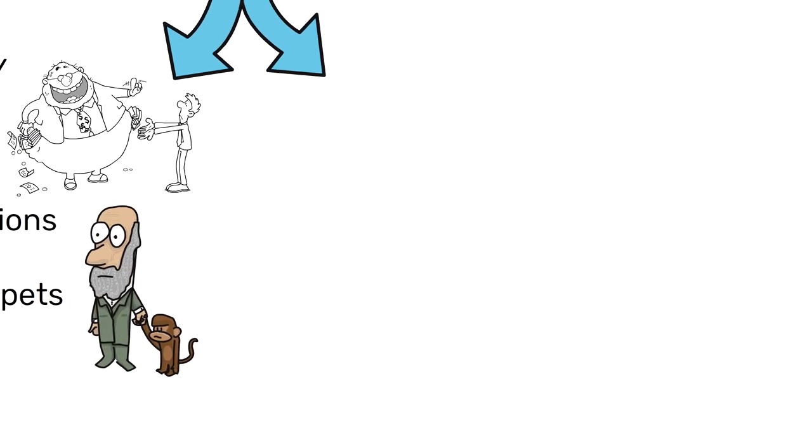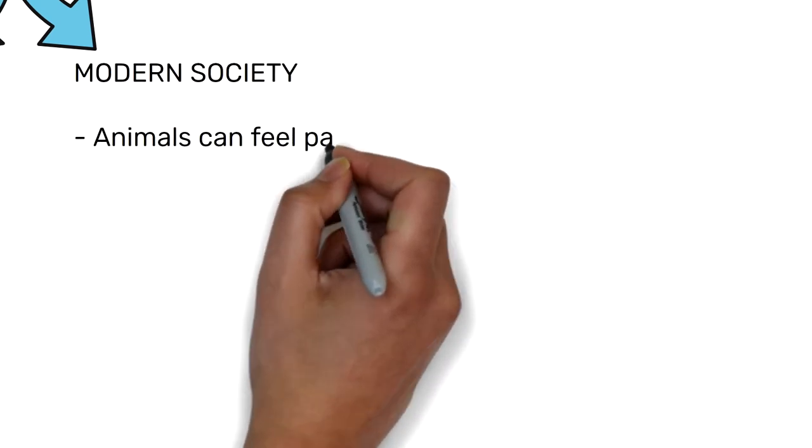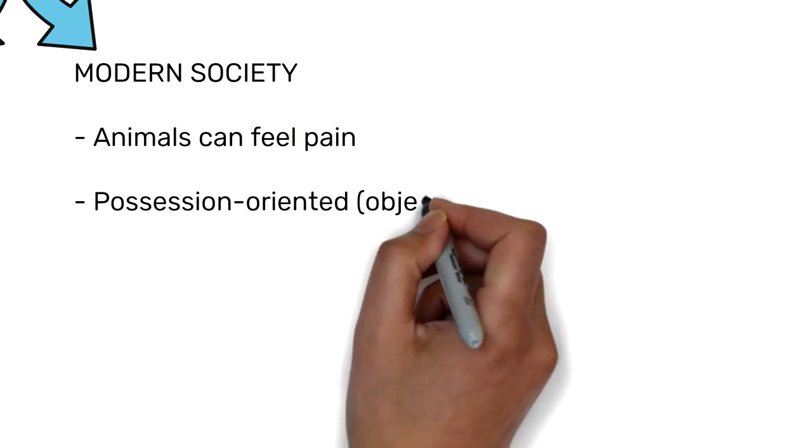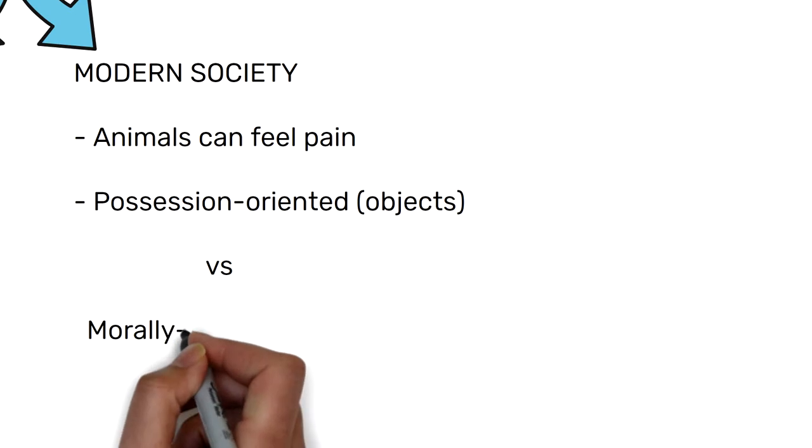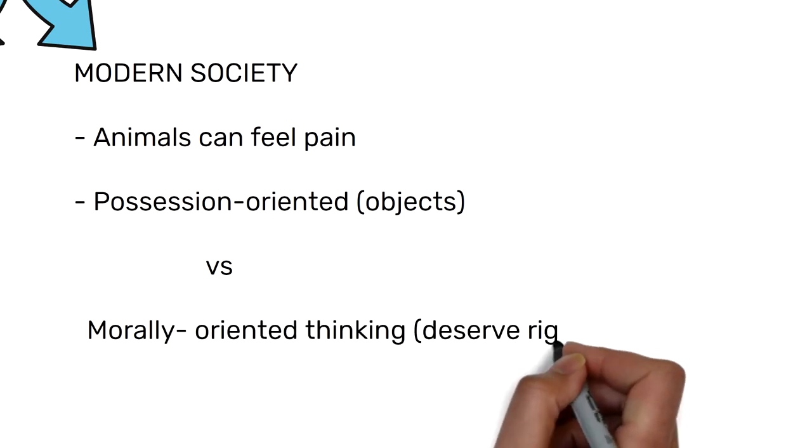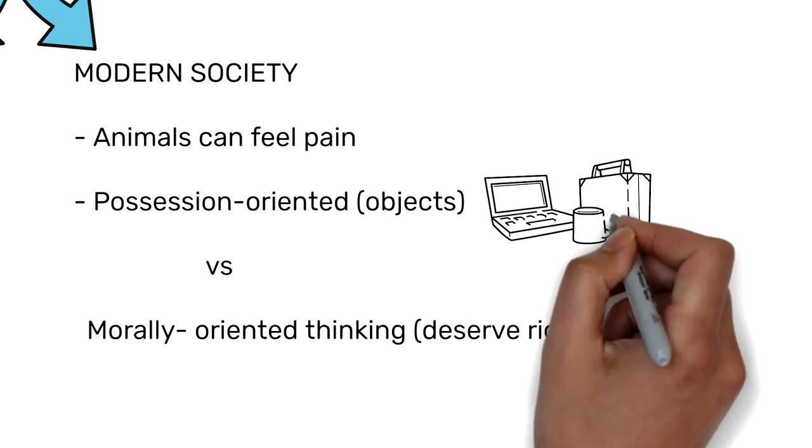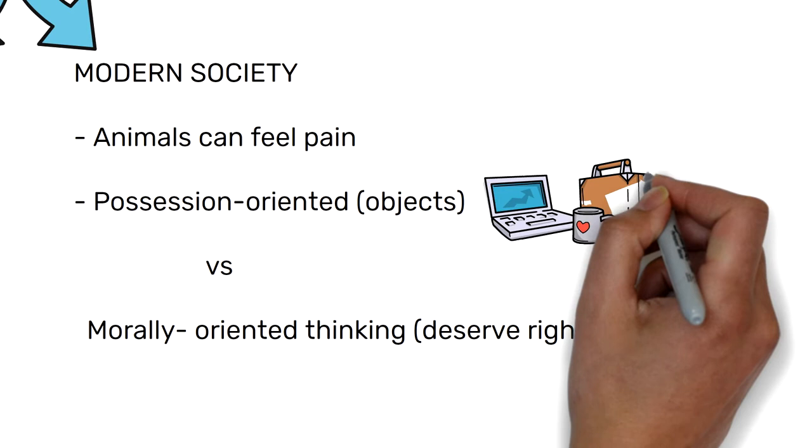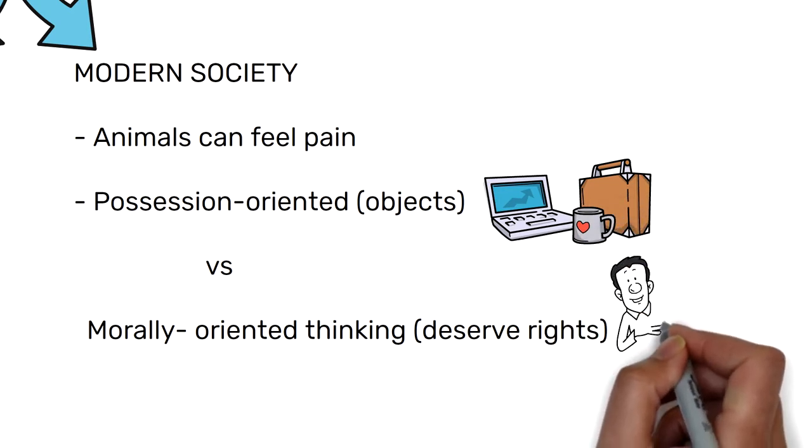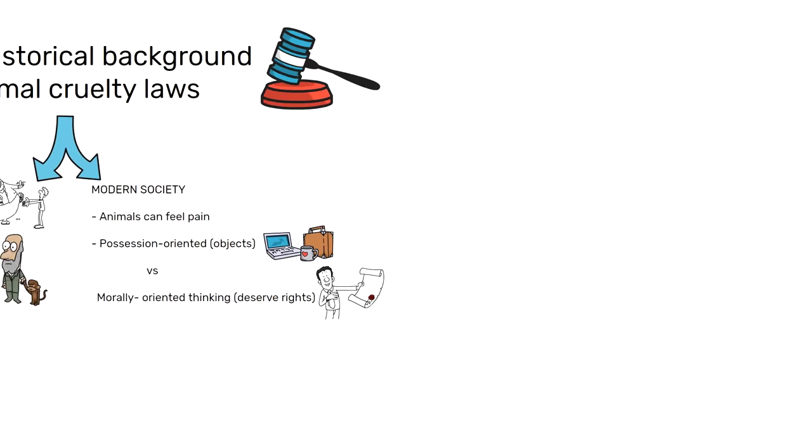With the rise of modern society, animals were seen as sentient beings, and this coincided with the development of similar views regarding persons of other nations, creeds, colours, and women. For example, knowing that they have feelings such as pain as well. There was a clear conflict between possession-oriented people who had the view that women, animals, etc. were just objects or possessions, and morally-oriented legal thinking which was arguing that everyone deserves rights.